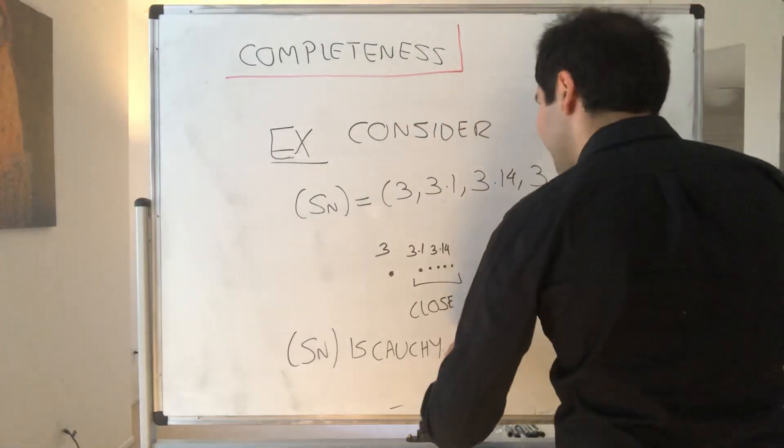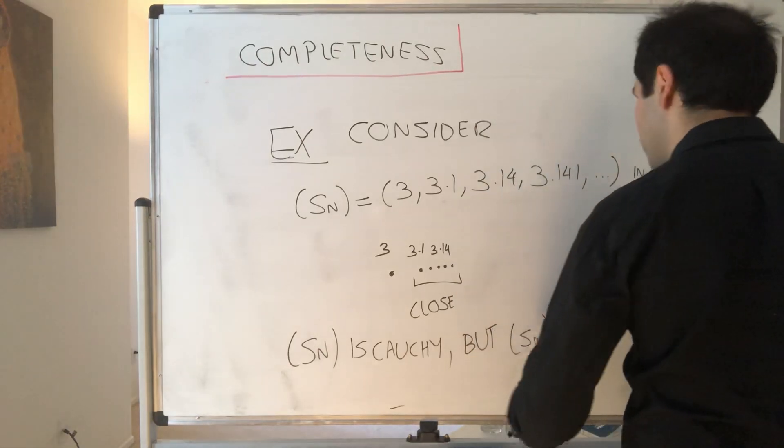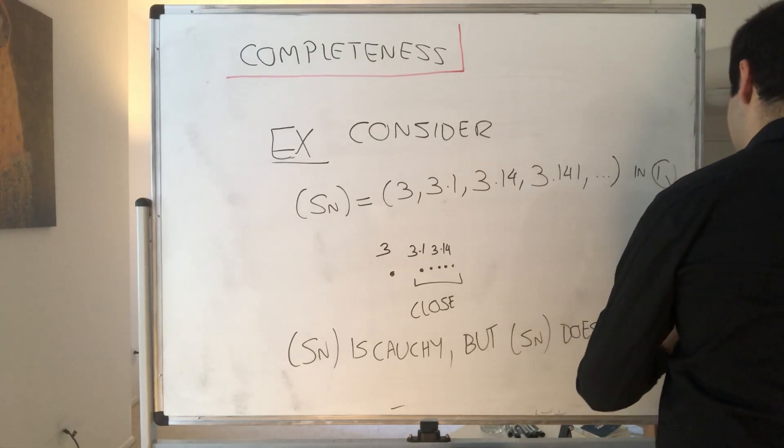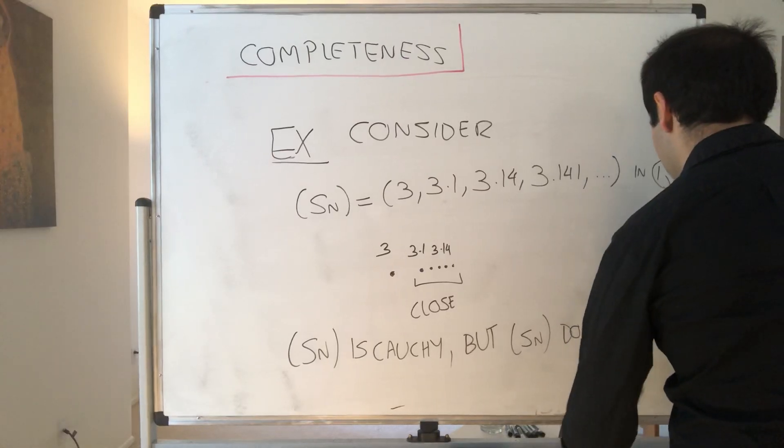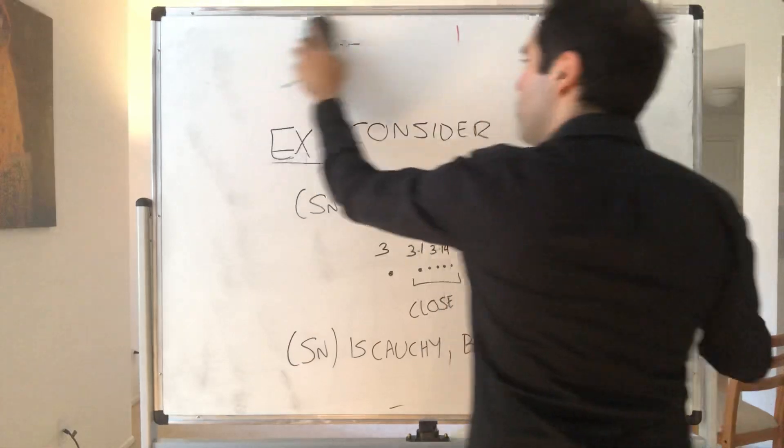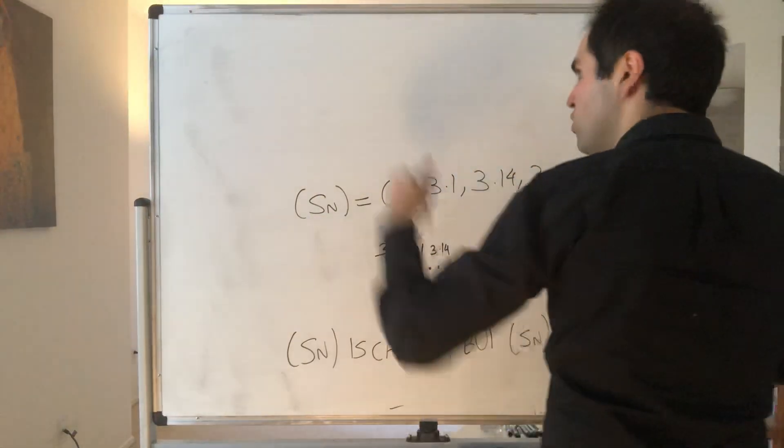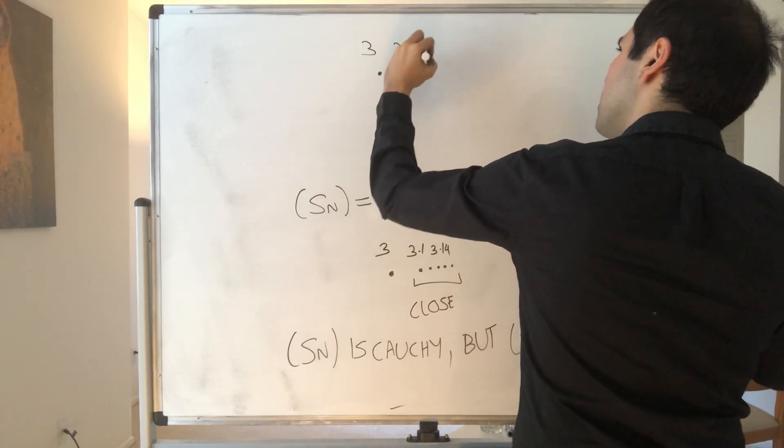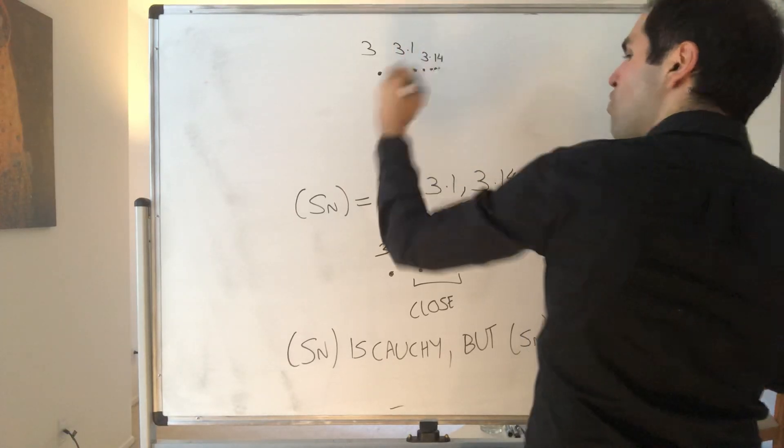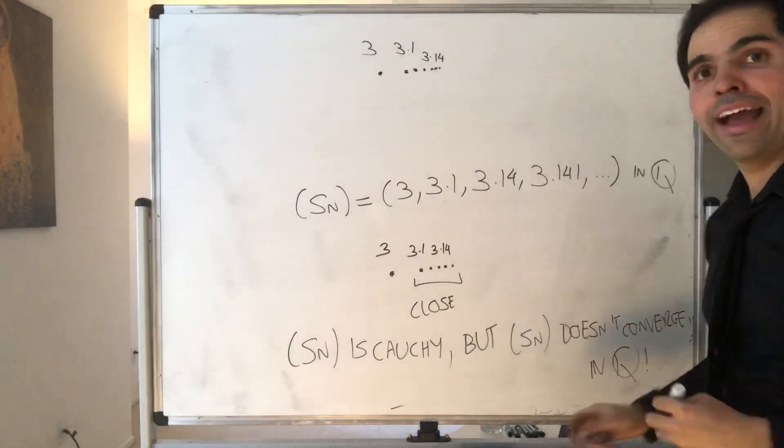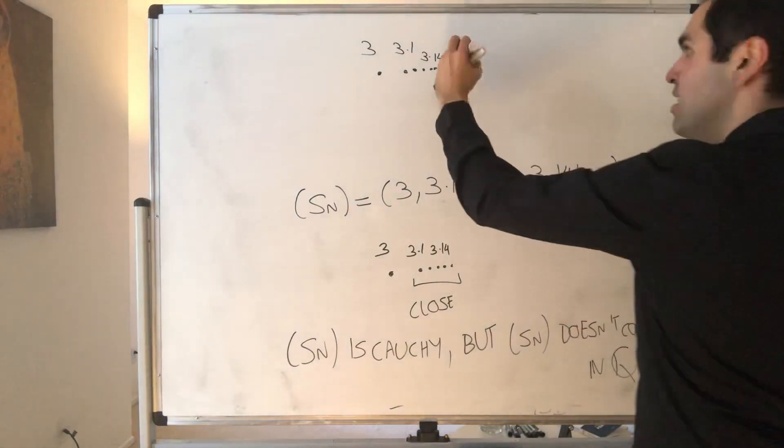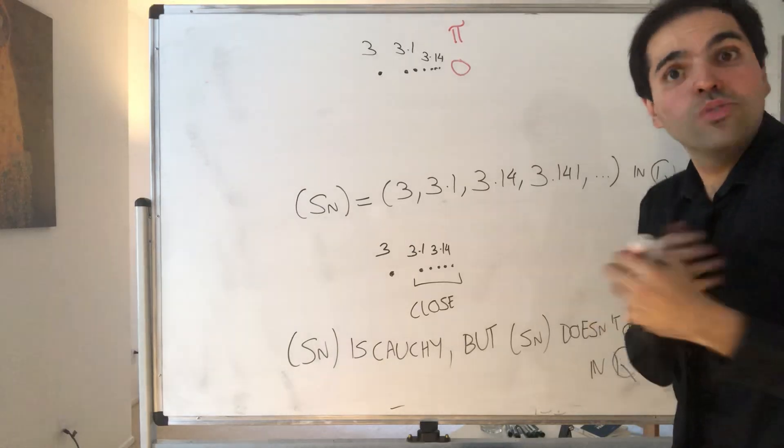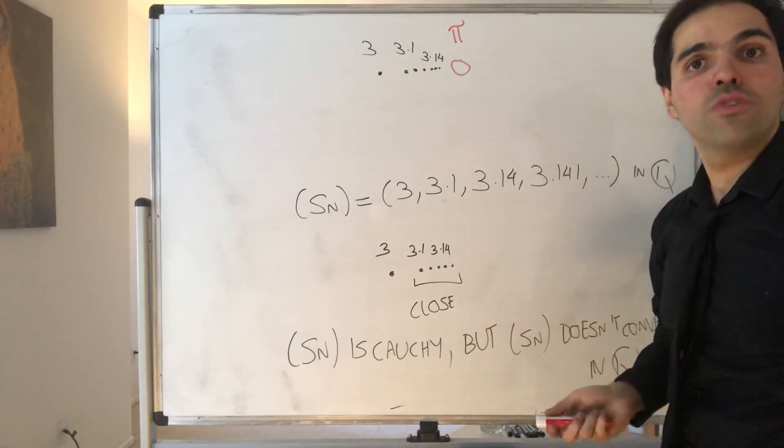But surprisingly, Sn doesn't converge in the rational numbers, in Q. And why is that? Because, remember, the rational numbers have holes. It does seem that the terms are closer and closer to each other. But look, if it converges, then it would converge to π. But we do not know what π is. It is not a rational number. So in fact, here, the sequence is lost. It seems to get closer and closer, but it doesn't converge.